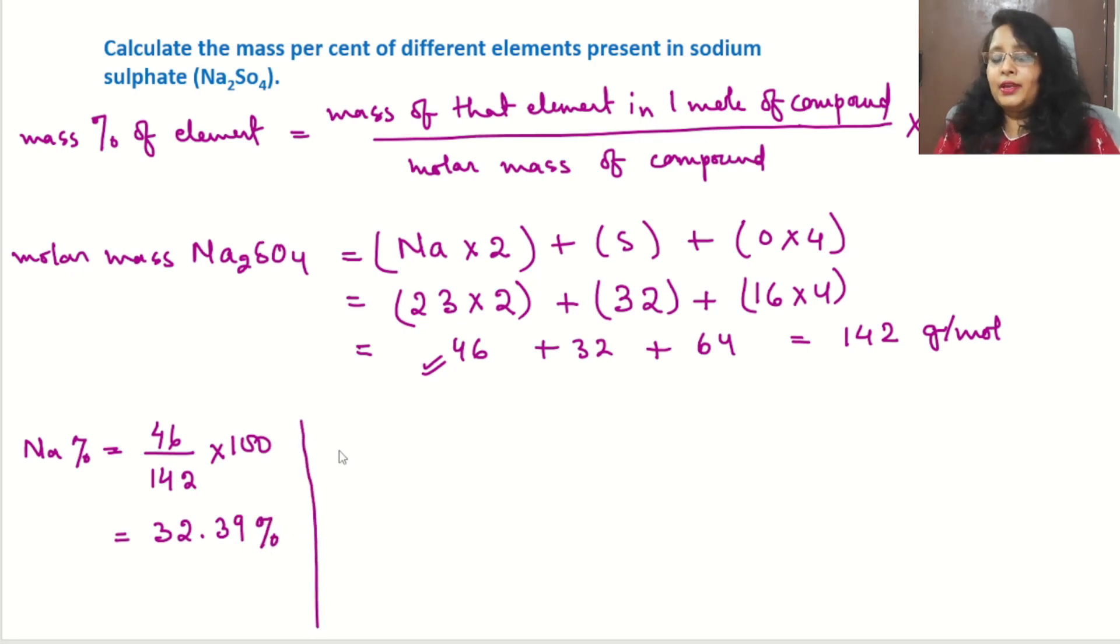In the same way, we will get the mass percent of sulfur in the compound. Mass of sulfur in one mole is 32, so we write 32, then we write the molar mass of the compound, 142, multiplied by 100 according to the formula. After doing all the calculations, we get 22.54%. So sulfur's mass percent is 22.54%.